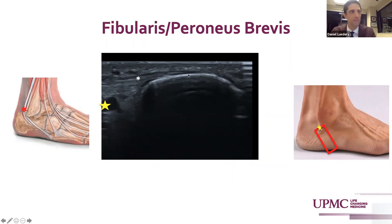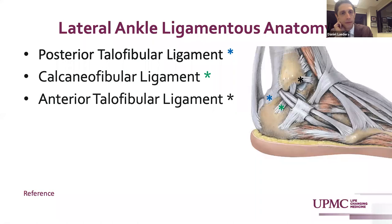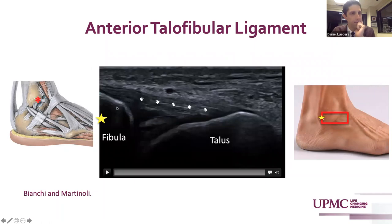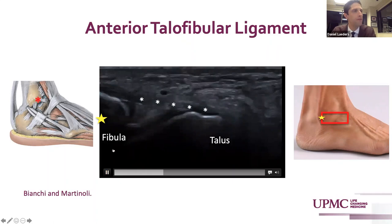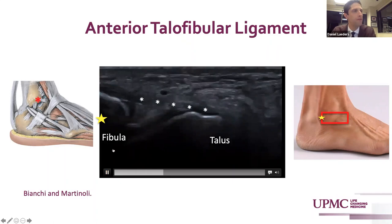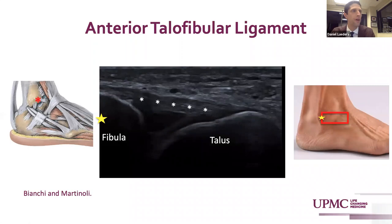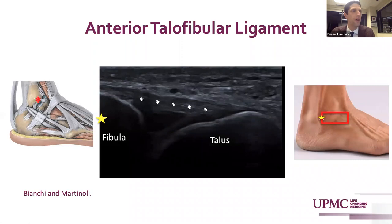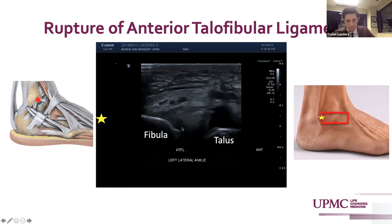Moving on then to the lateral ankle ligamentous stabilizers. The three most prominent and visible structures are your posterior talofibular ligament, your calcaneofibular ligament, and your anterior talofibular ligament. The anterior talofibular ligament is the one most often injured — it's the most anterior structure that bridges from the anterior fibula over to the talus. It is relatively broad, about five millimeters, so performing a dorsal-plantar sweep will help to fully assess for pathology. In this image we see a full thickness disruption of the anterior talofibular ligament with no bridging fibers from fibula to talus, and a rather large effusion distending the lateral joint recess.